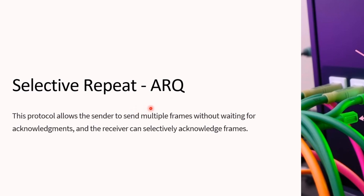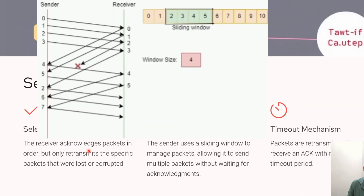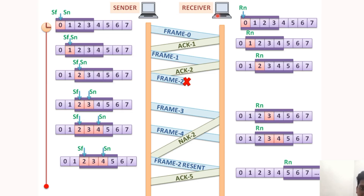Selective Repeat protocol is a type of error control protocol used in data communication, ensuring reliable delivery of data over a noisy channel. Unlike the previous two methods, rather than retransmitting the entire window, the Selective Repeat method retransmits only the particular frames that were not correctly received. The receiver acknowledges packets in order but only retransmits specific lost or corrupted packets, using a sliding window technique allowing multiple packets to be sent without waiting for acknowledgement. A timeout mechanism triggers retransmission if the sender doesn't receive an acknowledgement within a set time.